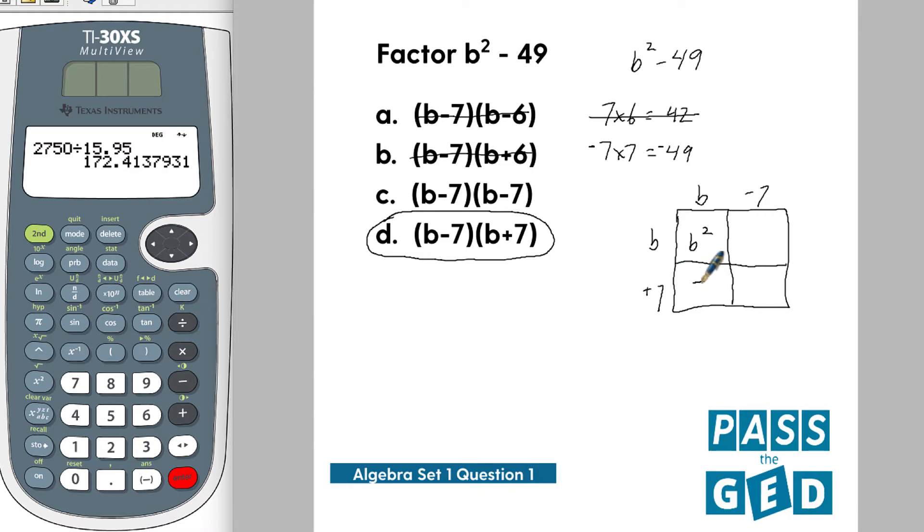This becomes b squared, b times positive 7 becomes 7b, b times negative 7 becomes negative 7b, and negative 7 times positive 7 becomes negative 49. If we add these together they're going to cancel each other out. Positive 7b minus 7b is 0, so we end up with b squared minus 49. So d is the answer.